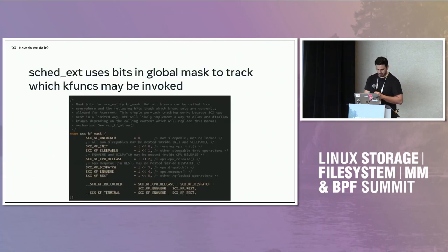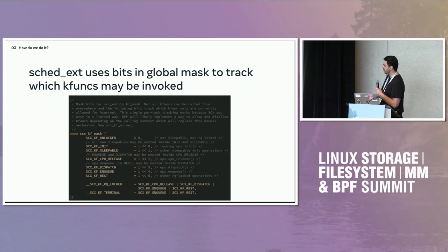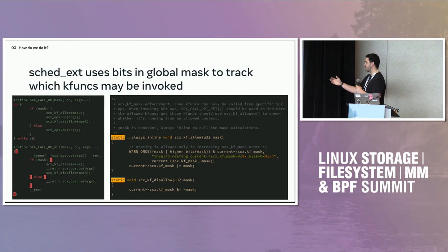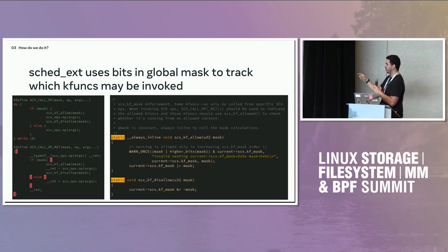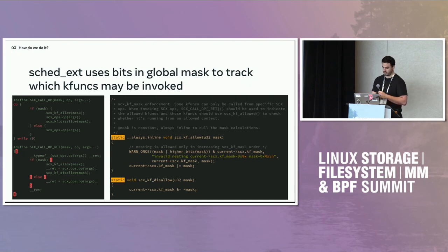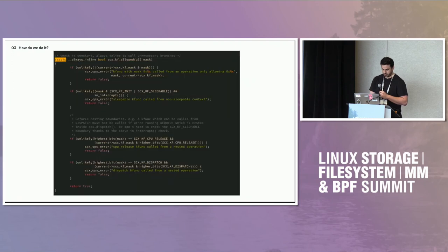So how do we do it? In sched_ext, we defined a set of flags which you statically specify in a macro when you perform the kfunk call. In that macro, we call some function in sched_ext which does a static check to decide if you're actually allowed to call it in that context. You specify — for example, calling this enqueue callback — this is the mask of contexts where it's allowed to be invoked from. We record a mask when we set the flags.